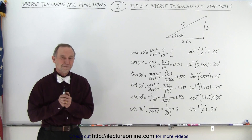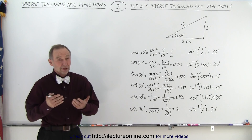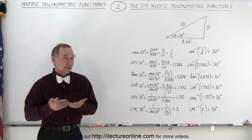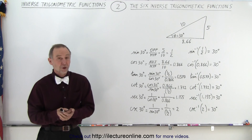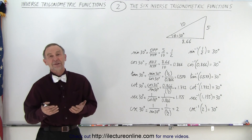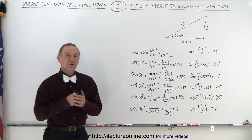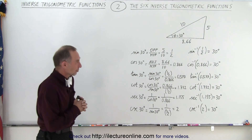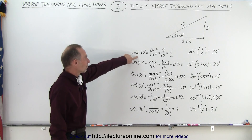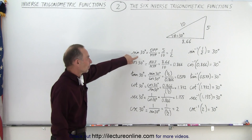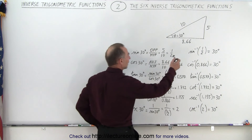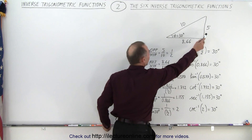Welcome to my lecture online. It turns out that for each of the six trigonometric functions we have an equivalent inverse trigonometric function. For example, we have the sine of 30 degrees, which by definition on a triangle is the ratio of the opposite side over the hypotenuse.